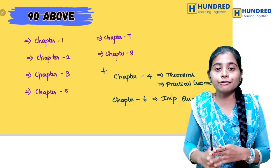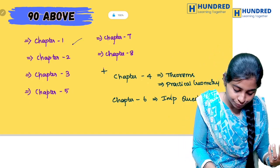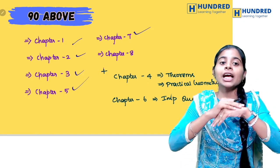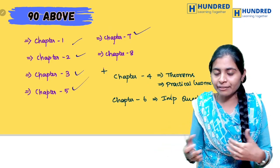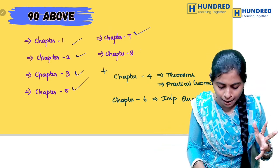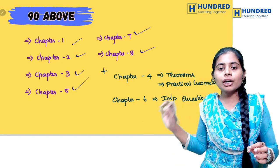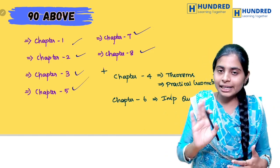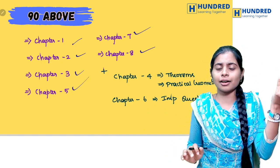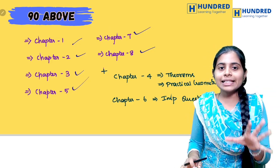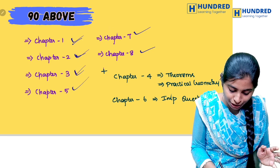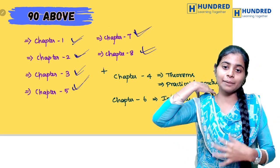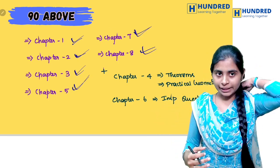For 90 above, focus on chapters 1, 2, 3, 5, 7, and 8. At least chapters 1, 2, 3, 5, and 7 — this is very important. You should learn the whole chapter completely. For chapter 1, learn the complete chapter. Practical geometry has six important questions. If you are learning to cover this 90 above, go to graph and practical geometry, then book back one-mark questions. If you are confident in these chapters, you are doing well.